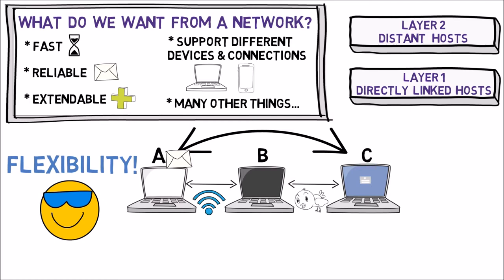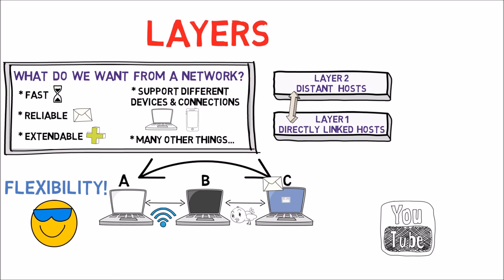At this layer, host A needs to know that in order to reach host C, it first needs to send a message to host B, and then host B will forward it to host C. This way, layer two is only responsible for finding the route to send the message — it uses the service provided by layer one to transmit data between directly connected hosts. Now that we understand why we need layers, in the next video we'll get to know the five-layer model.